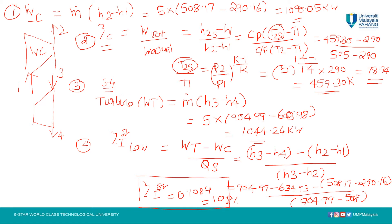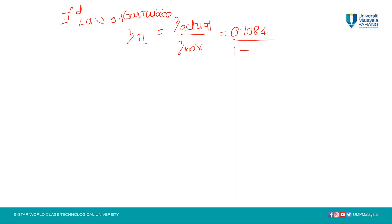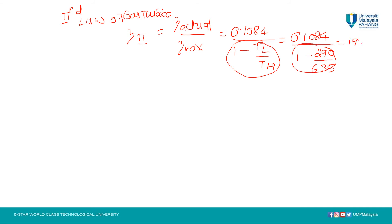Now let us find out the second law efficiency of the gas turbine. The second law efficiency equals actual efficiency divided by maximum possible efficiency. The actual efficiency is 0.1084 from the previous step. The maximum possible efficiency corresponds to a reversible heat engine operating between the heat source and sink temperatures from the table: T_low = 290 K and T_high = 635 K, giving a reversible efficiency of 19.95 percent.